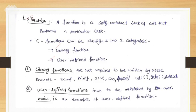User-defined functions mean the user, programmer, or developer can make the function according to need and use it throughout the program. For example, scanf, printf, sqrt — these are functions already available in the C library. Users can directly use those functions, which is why they are called library functions.